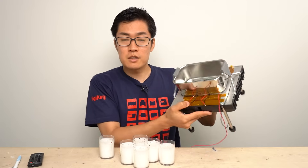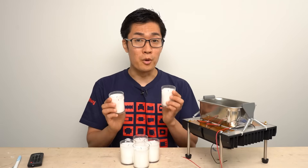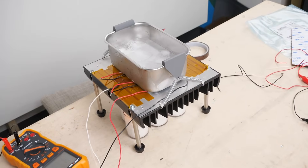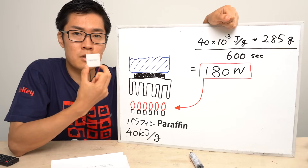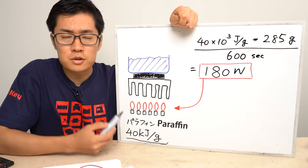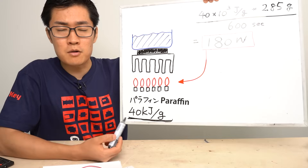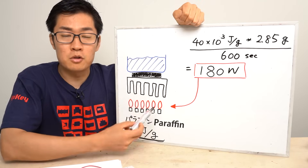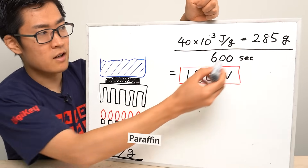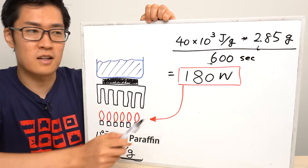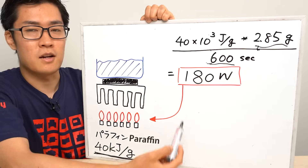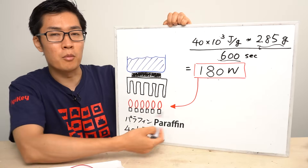The output power is pretty good. Next, I will calculate the power generation efficiency of this device. I will calculate the efficiency using the energy generated when the candles were burned and the energy extracted from the Peltier devices — not including the energy supplied from the ice water. The raw material for candles, paraffin, has a heat value of about 40 to 50 kilojoule per gram; I will calculate using 40 kilojoule per gram. I measured how much the candles lost when burning six candles for 10 minutes — they lost 2.85 grams. The calorific value of paraffin is 40 kilojoule per gram and it decreased by 2.85 grams in 10 minutes. The calculation result gives 180 watts — this is the work rate when burning six candles.